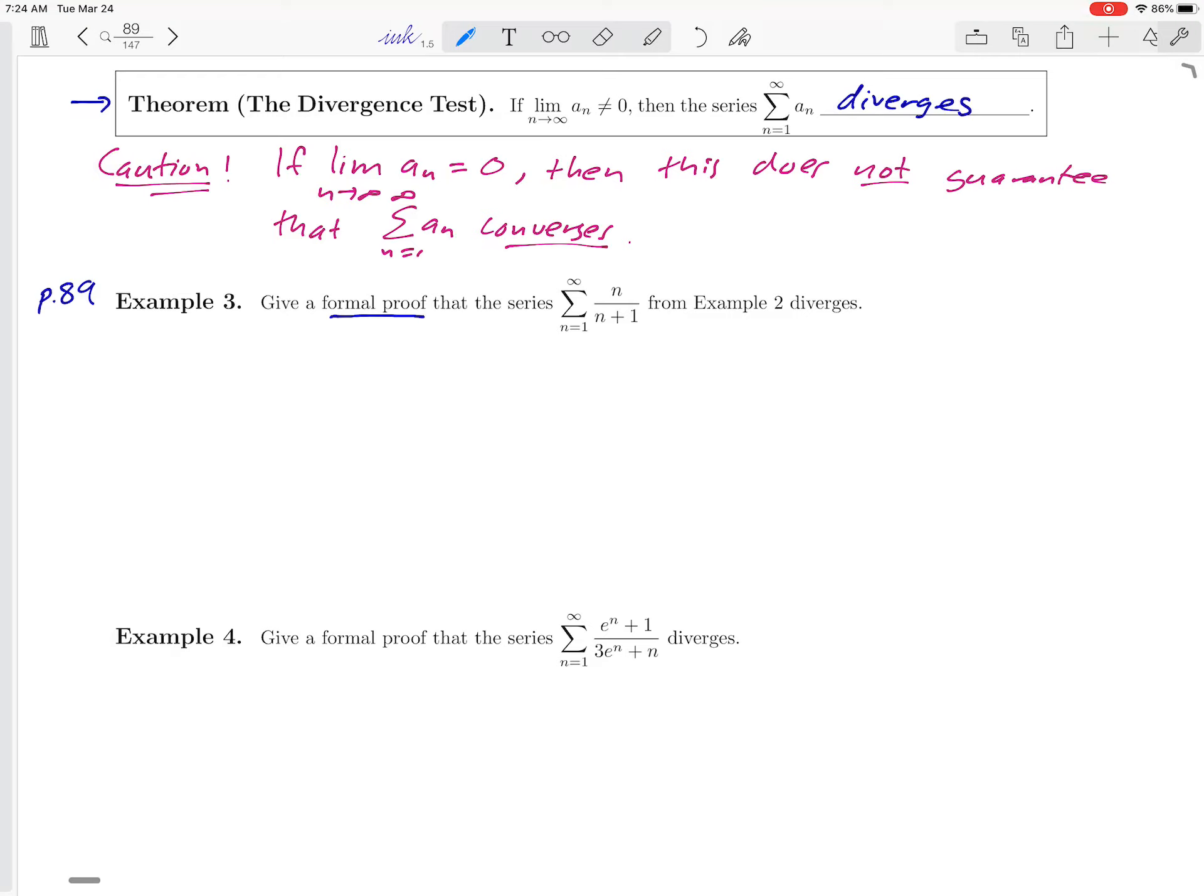So how does the divergence test work? Well, again, to use it, we have to convince the reader that the limit as n goes to infinity of the term in our series is not 0. And if we can do that, then we can conclude that the series diverges. That's going to be the structure of this formal proof that we write.